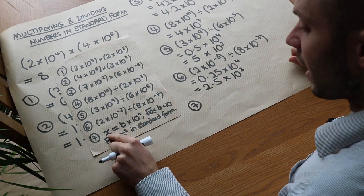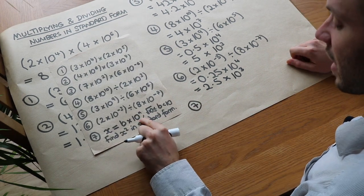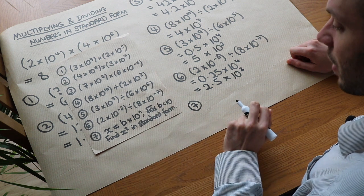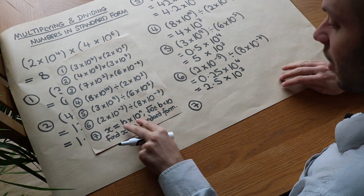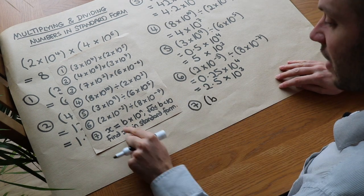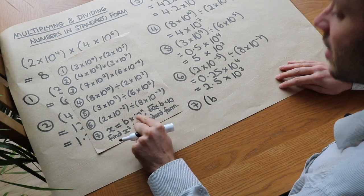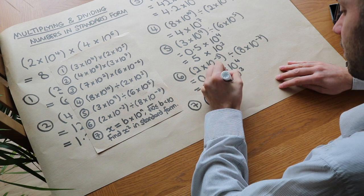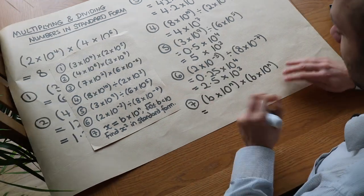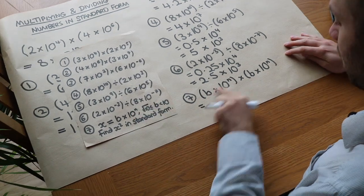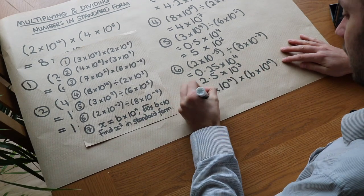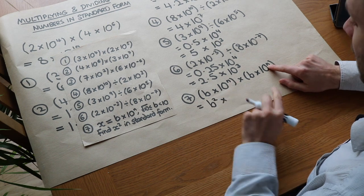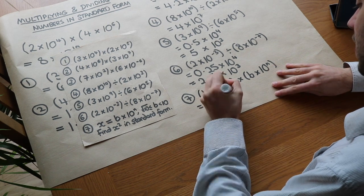Now this final one is a bit more algebraic: x equals b times 10 to the n, and b is between root 10 and 10. Find x squared in standard form. So x squared is b times 10 to the n times b times 10 to the n. We do the usual thing — b times b is b squared, and 10 to the n times 10 to the n, we add the powers, n plus n is 2n, so it's 10 to the 2n.